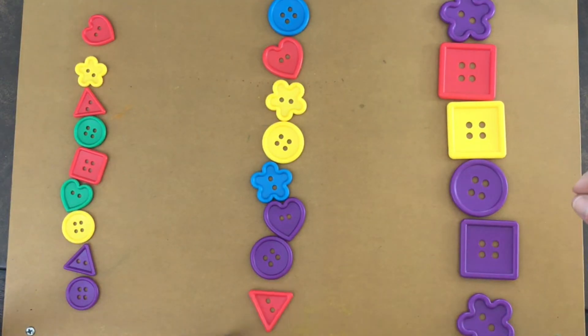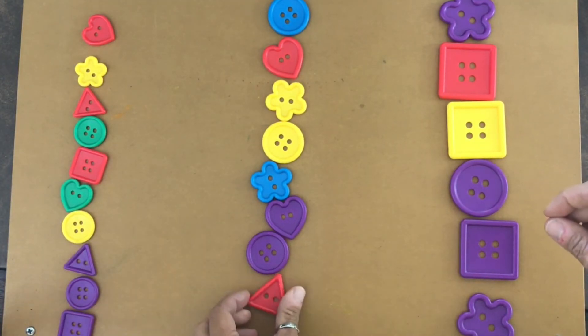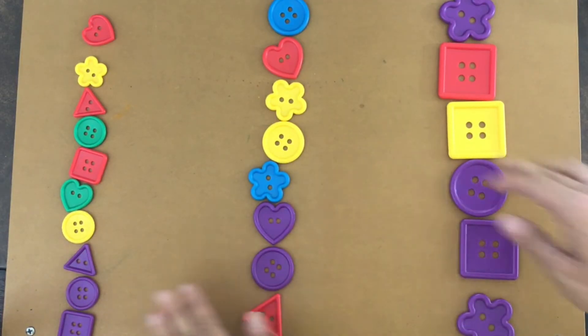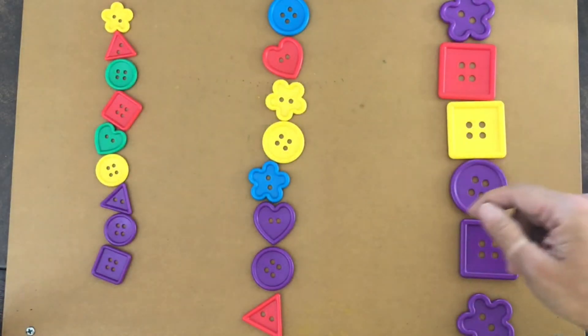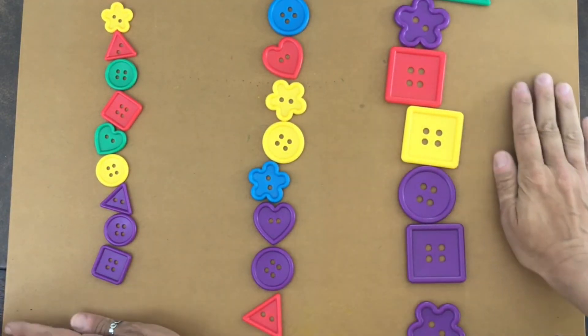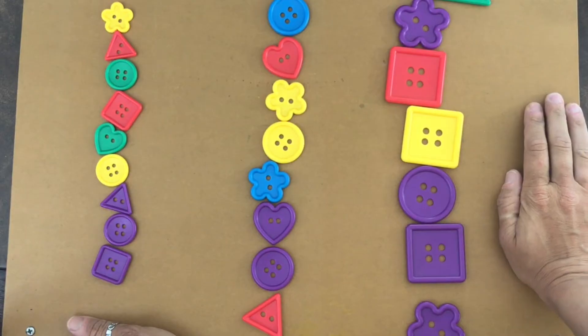How'd I do? Nope, nope, that one goes there and this one too. Nope, this one goes here. All right, so we've got our small, our medium, and our large. Any other way you think we can sort them?